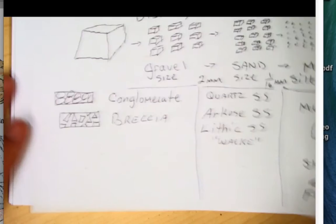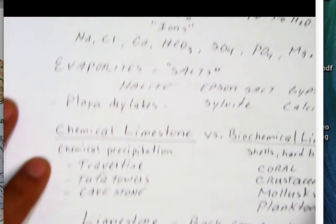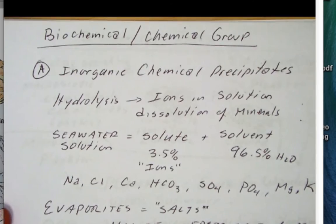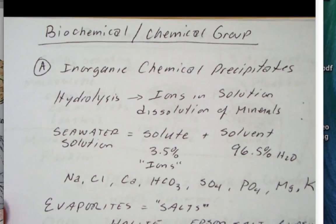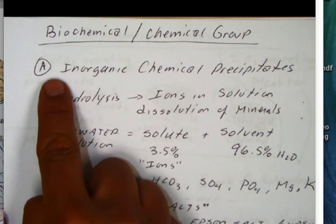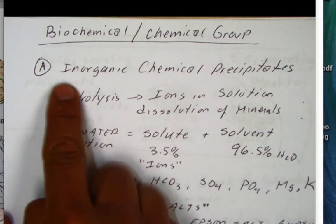Now, let's look at, well, in fact, we'll introduce the biochemical chemical group. Now in this group, there's basically two types. There's one that's going to be organic and one that's going to be inorganic. And the first one is the inorganic chemical group.